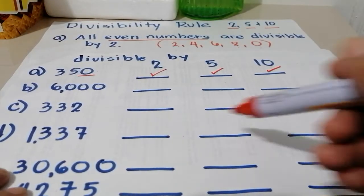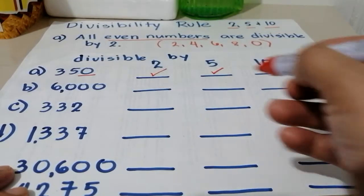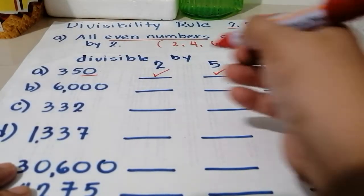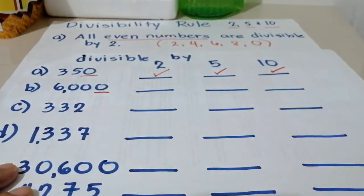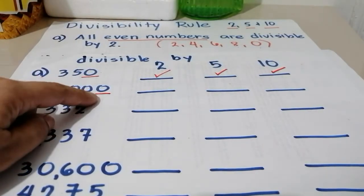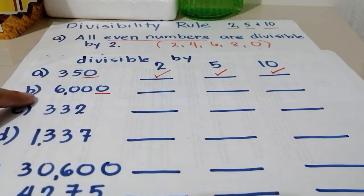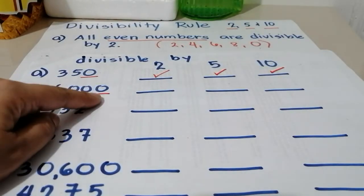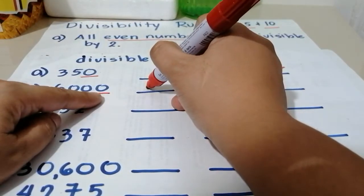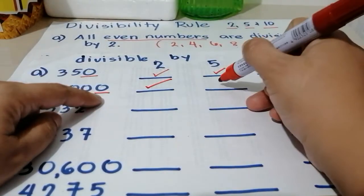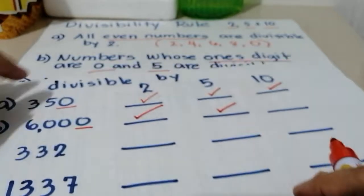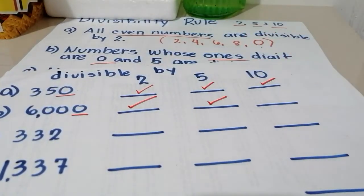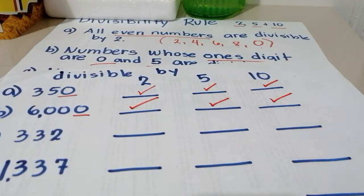Next — 6,000. Again, titignan lang natin yung ones digit. And the ones digit of 6,000 is 0. At dahil 0 dyan, 0 is an even number. At the same time nag-i-end siya ng 0, so pwede rin siyang divisible by 2, by 5 kasi 0 at 5, at since 0 siya, divisible siya agad by 10.